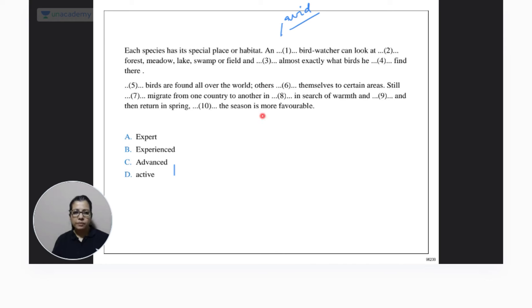In this I knew there would be confusion. You are talking about a bird watcher who can simply look at certain things and almost exactly you would know what birds are going to come there. So it will be either experienced or expert. No need for advanced. What is an advanced bird watcher? Nothing. Active bird watcher, not exactly. You need somebody with experience to just look at the scenario and guess or tell what birds are coming there. So it's expert or experienced. Here we'll go with expert. Chalo next.